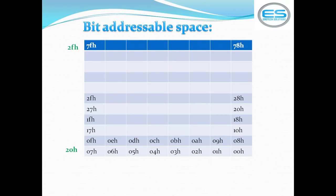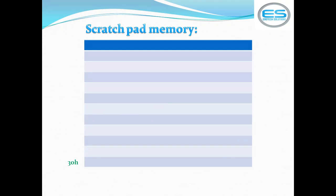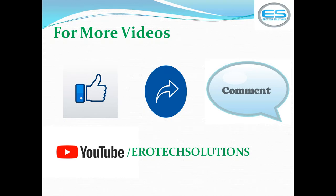The advantage of bit-addressable space is that it allows storing single bits using their addresses, or you can access a complete byte location by its address. The final section of RAM memory is scratch pad memory, which starts at 30h after 2Fh and ends at 7Fh. These locations allow saving one byte of data each. This completes the RAM memory organization of 128 bytes for the 8051 microcontroller.